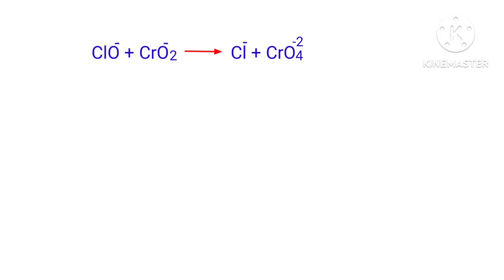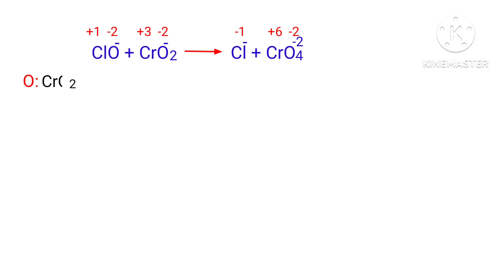Figure out the reducing and oxidizing agents by the rules of assigning oxidation numbers. In this equation, chromium has a charge of +3 and it is changing into +6, so chromium is being oxidized. Chlorine has a charge of +1 and it is changing into -1, so chlorine is being reduced.